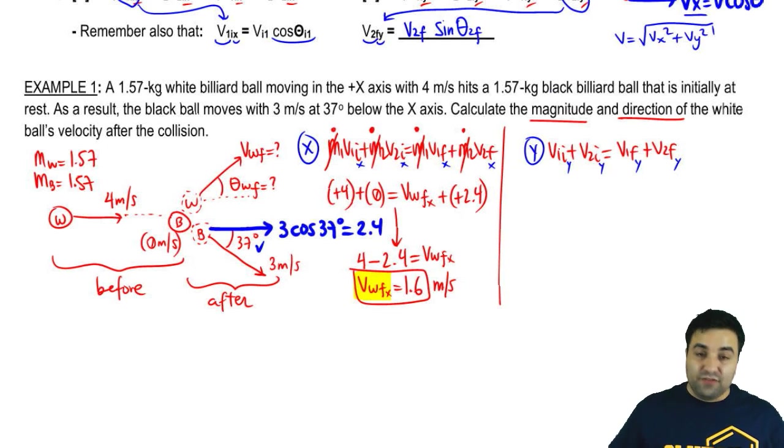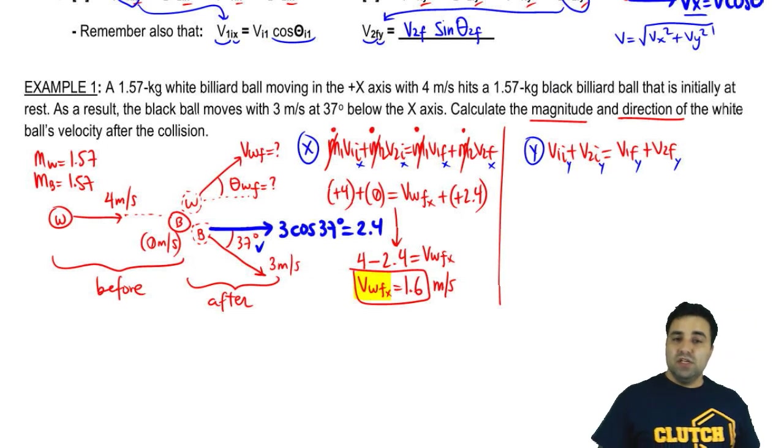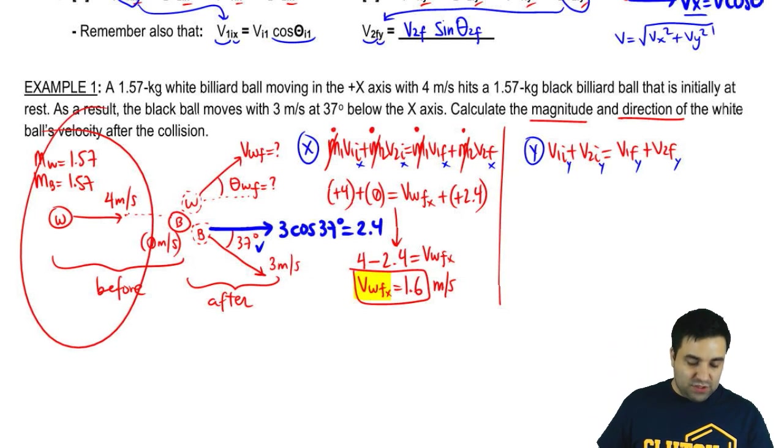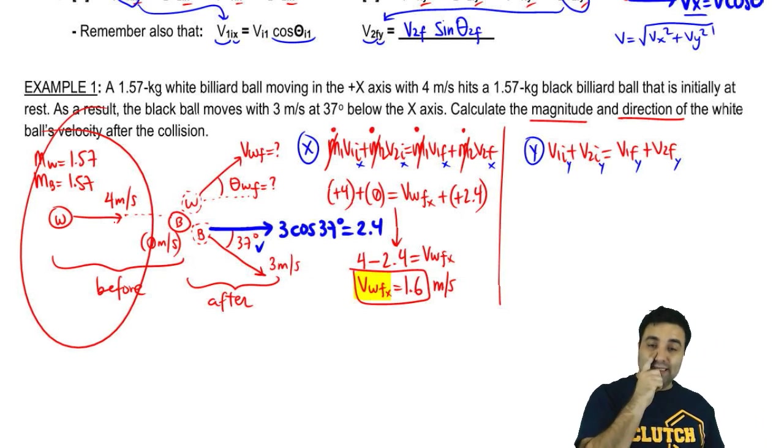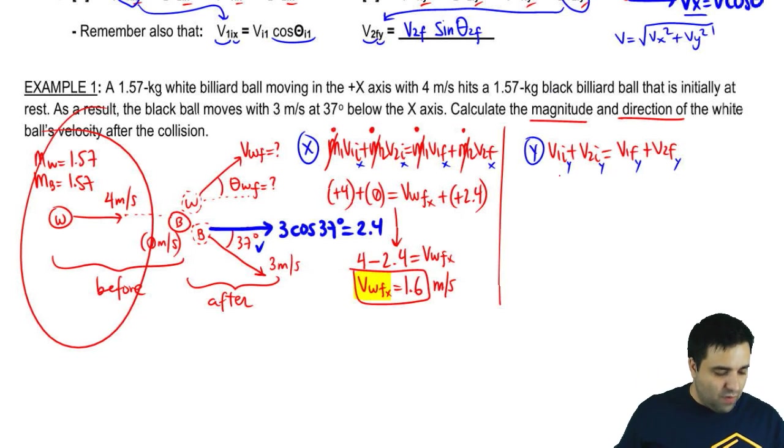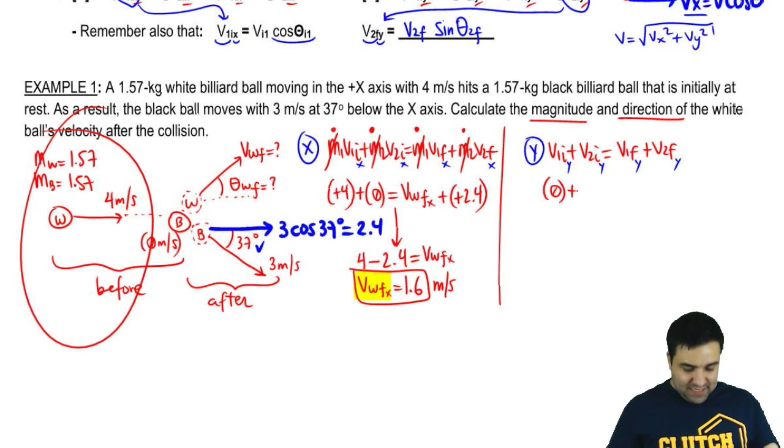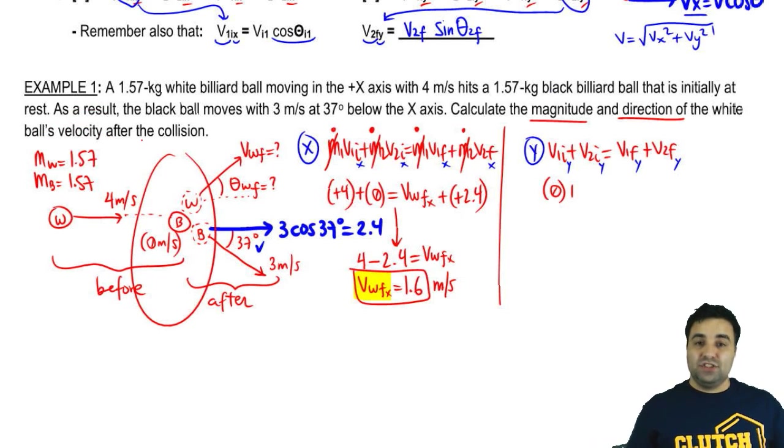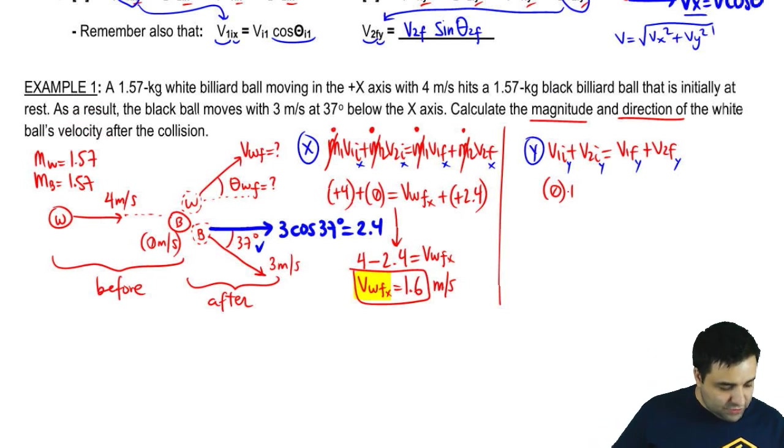The initial velocity of the first object in the y-axis. So the first object initially is this one. In the beginning, this is the white ball. It's going to the right. If it's going flat to the right, it doesn't have any velocity in the y-axis, so this is zero. Now, what about the second object? The second object before the collision isn't even moving. The second object, this guy, before the collision isn't even moving, so it's just zero as well.